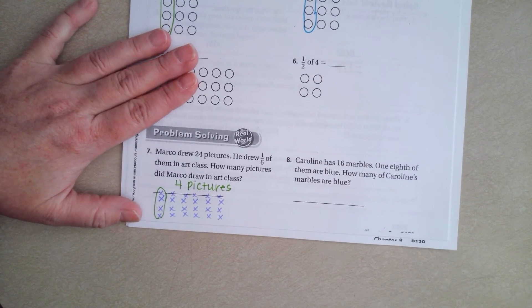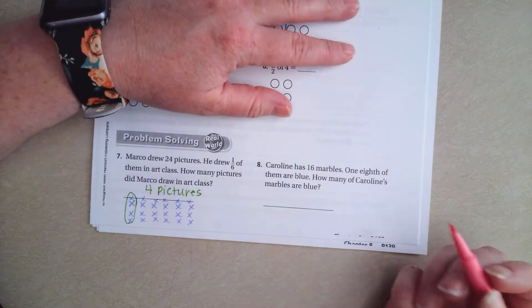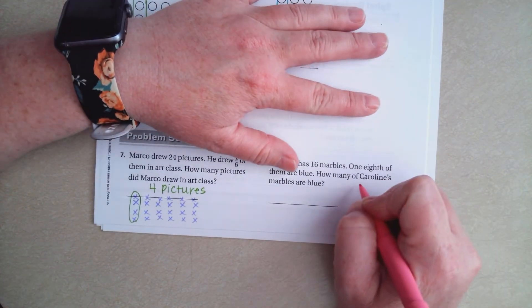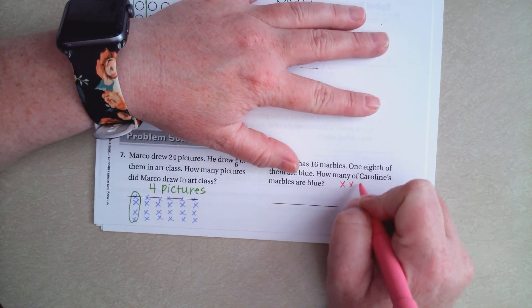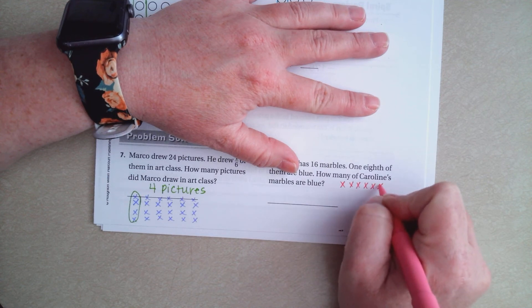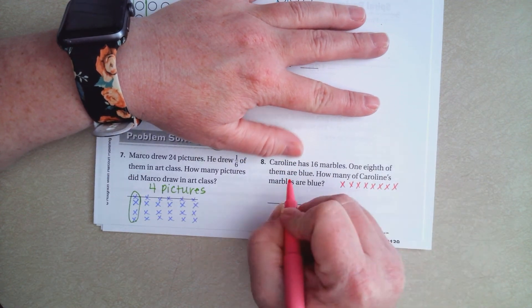Caroline has 16 marbles. 1/8 of them are blue. So 1, 2, 3, 4, 5, 6, 7, 8 because we're dealing with 8ths.